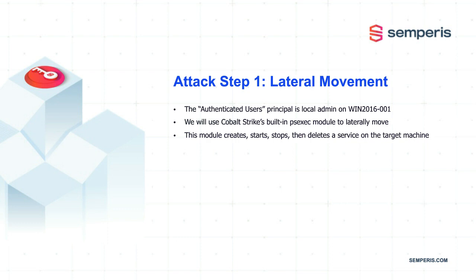We're going to use Cobalt Strike, which is a commercial red team tool that has a built-in lateral movement module called PS exec. We'll use that to move to win2016-001. That module works the exact same way that the legitimate Sysinternals PS exec works — it creates, starts, stops, and then deletes a service on a target machine, and that service runs as the system user. Obviously you must be an admin on a system to be able to do that.